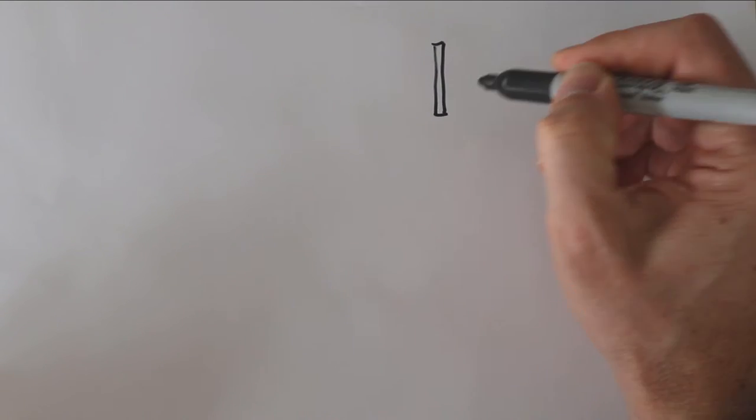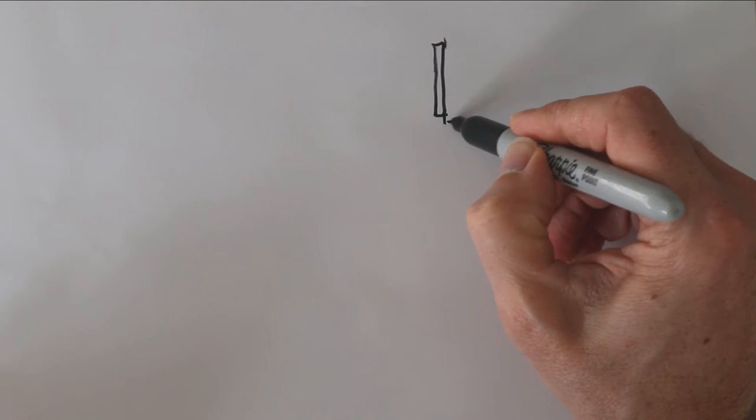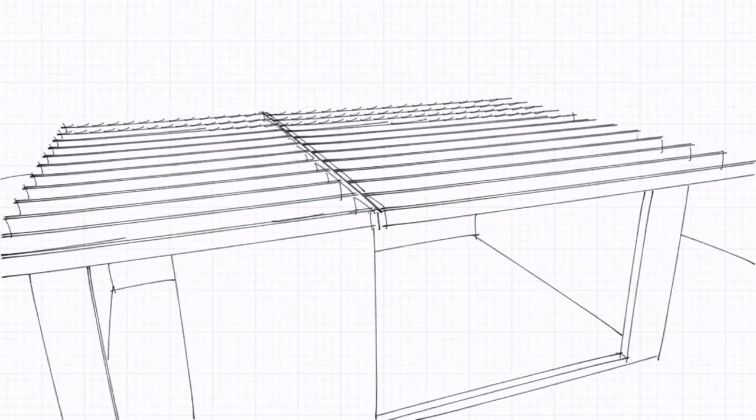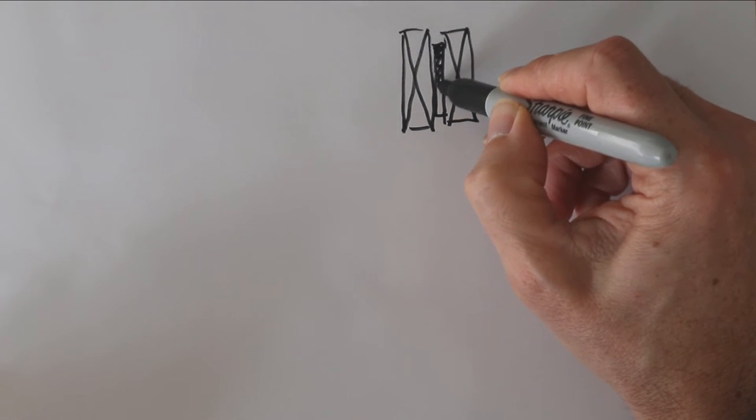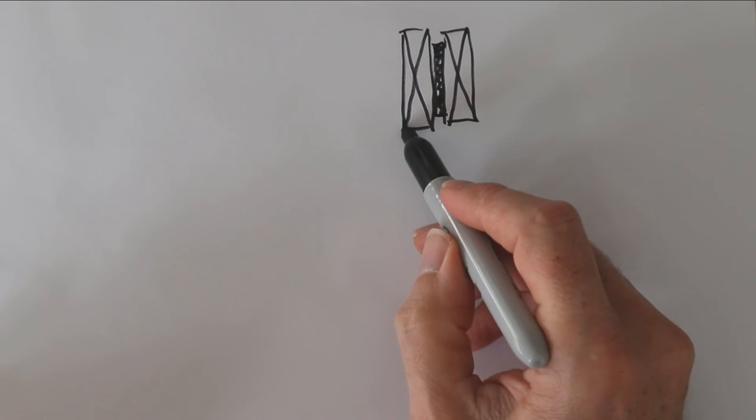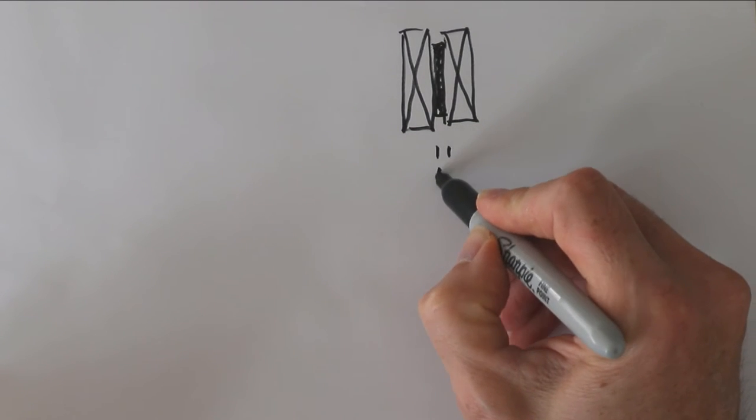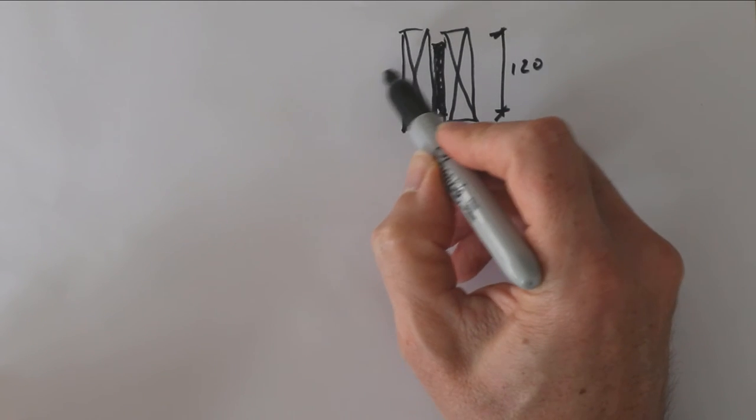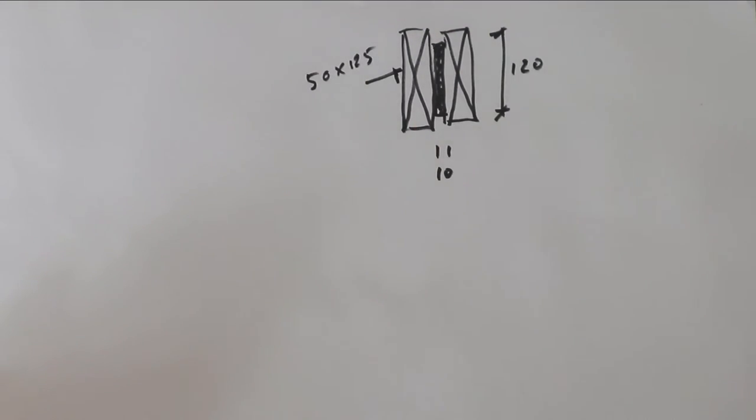Okay, so far so good. The flitch beam looks something like this: there is a rectangle of steel flat encased in two or more timbers on either side. If we take it in section—basically we've sliced through and shown what's within this beam—we have a steel flat, let's say it's 10 by 120, and let's say the timbers are 50 by 125, and that's millimeters.